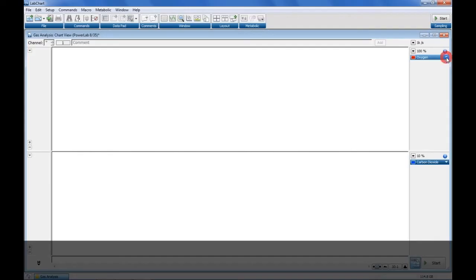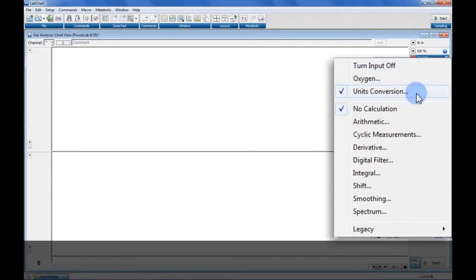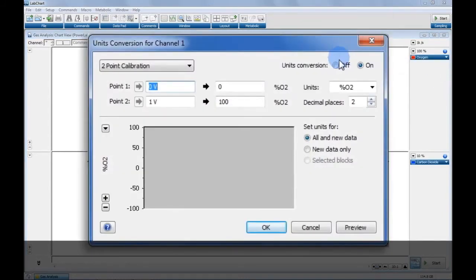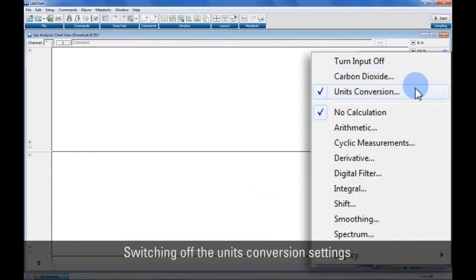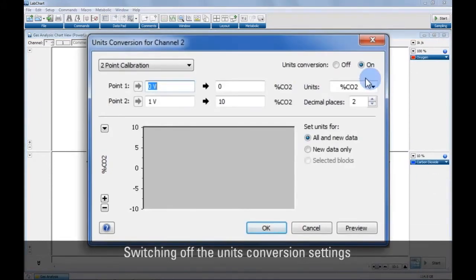Calibrating with LabChart. Use the unit's conversion feature to perform an independent calibration of each of the CO2 and O2 transducers in LabChart. Start by switching off the unit's conversion settings.